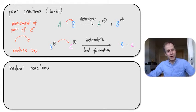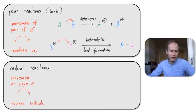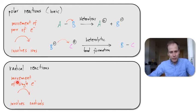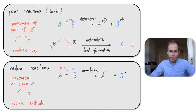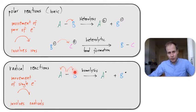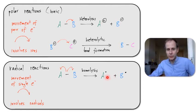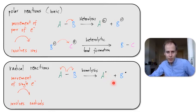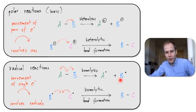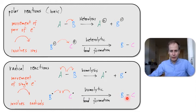There are not only polar reactions but also so-called radical reactions, and for those we use a different curly arrow notation. The only difference is that the head of the arrow has only one line, meaning only a single electron is moving, and it involves radicals rather than ions. Here A and B are connected via a covalent bond; one electron jumps to A, the other jumps to B — this is called homolysis. It breaks the bond but forms radicals: radical A with an unpaired electron and radical B with an unpaired electron. These radicals are intermediates that can react with other radicals to form covalent bonds — called homolytic bond formation — resulting again in a neutral molecule.